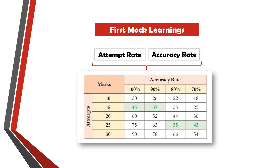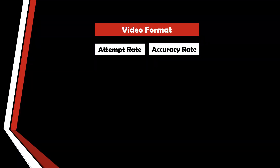Let me give you a table to explain this. In the rows you can see the number of attempts and in the columns you can see the accuracy rate. Consider two scenarios: a person who attempts 15 questions with 100% accuracy is going to score 45 marks. But another individual with 25 questions attempted and 70% accuracy is also going to score close to 45. So which is more difficult — maintaining 100% accuracy or attempting 25 questions? That's why my first target was to improve my attempt rate and the second was to maintain accuracy. A balance between both is very important.